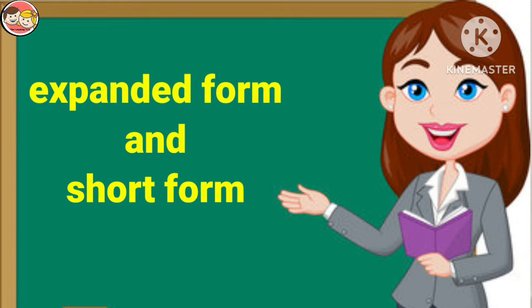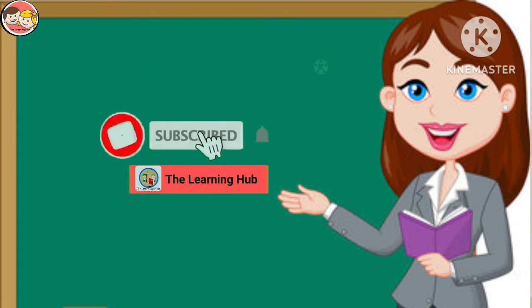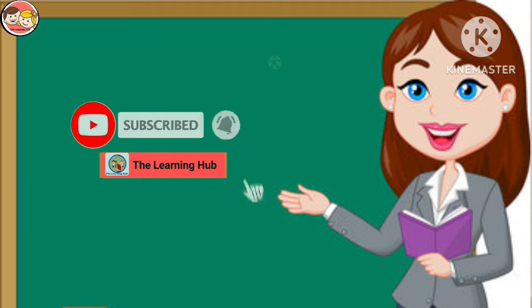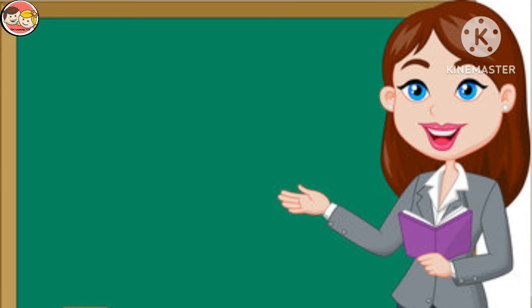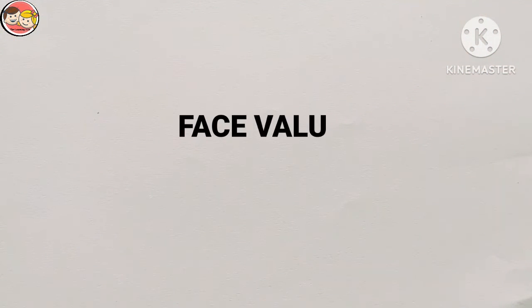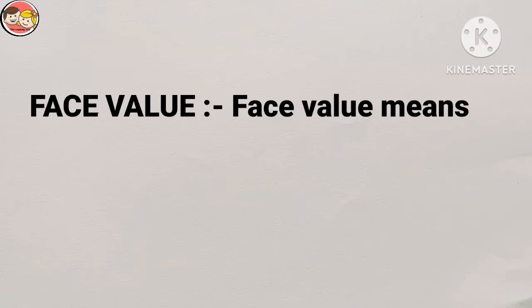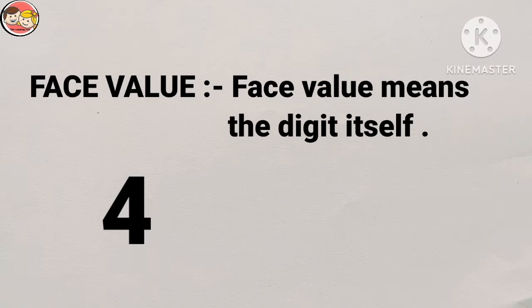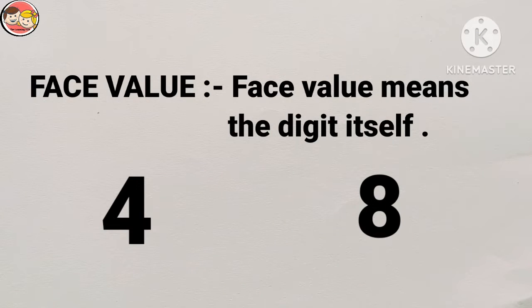To understand this concept we should know about place value of a number, which we have already learned. So before starting today's topic, let's do a quick recap of face value and place value of a digit. First, what is face value? Face value means the digit itself. For example, this is 4 — so the face value of this digit is 4. Next, this is 8 — so the face value of this digit is 8.